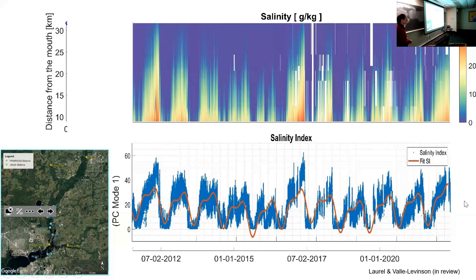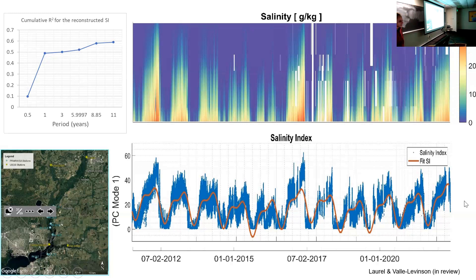So again, doing a decomposition of all these records into one index, this would be the principal component mode one, which shows the beautiful seasonal variation, but inter-annual variability in the seasonal signal. When we fit some of the astronomic effects to this signal, we get that orange line, and we're able to explain 60 percent of the variance of the salinity intrusion. So it is possible that salinity intrusion may be influenced by these periodicities that I've been talking about. We know that river discharge seems influenced by the nodal precession. So if river discharge indeed is influenced by nodal precession, then salinity intrusion would also be influenced by lunar precession.